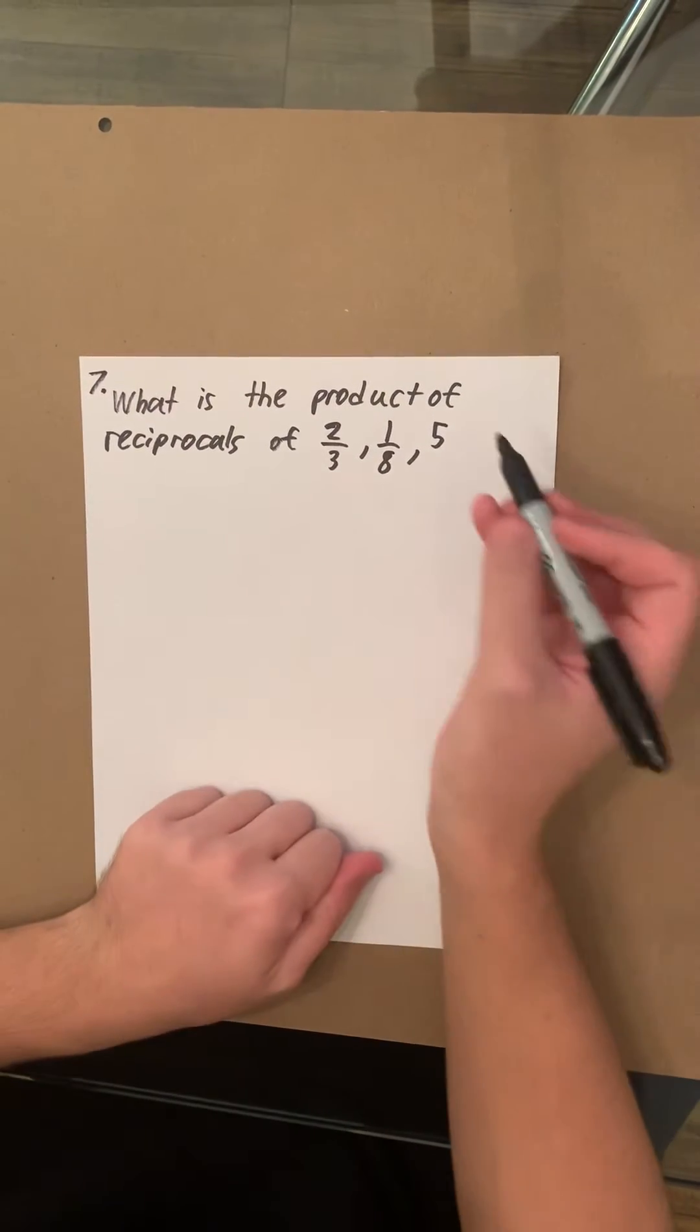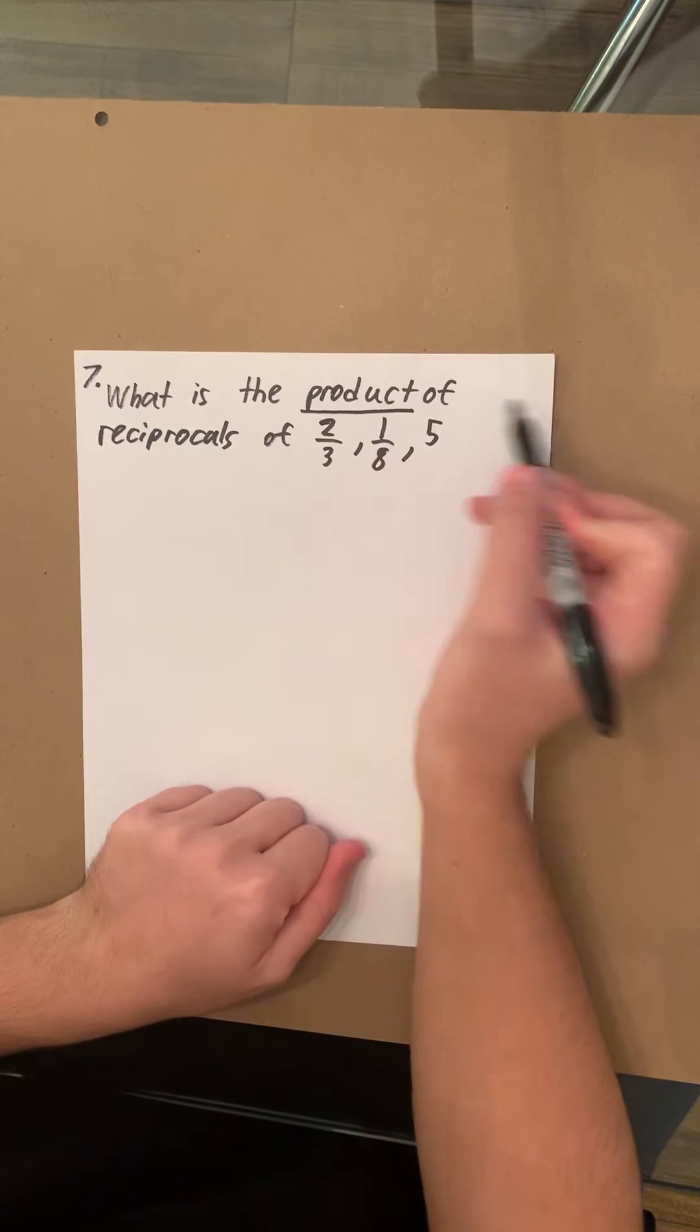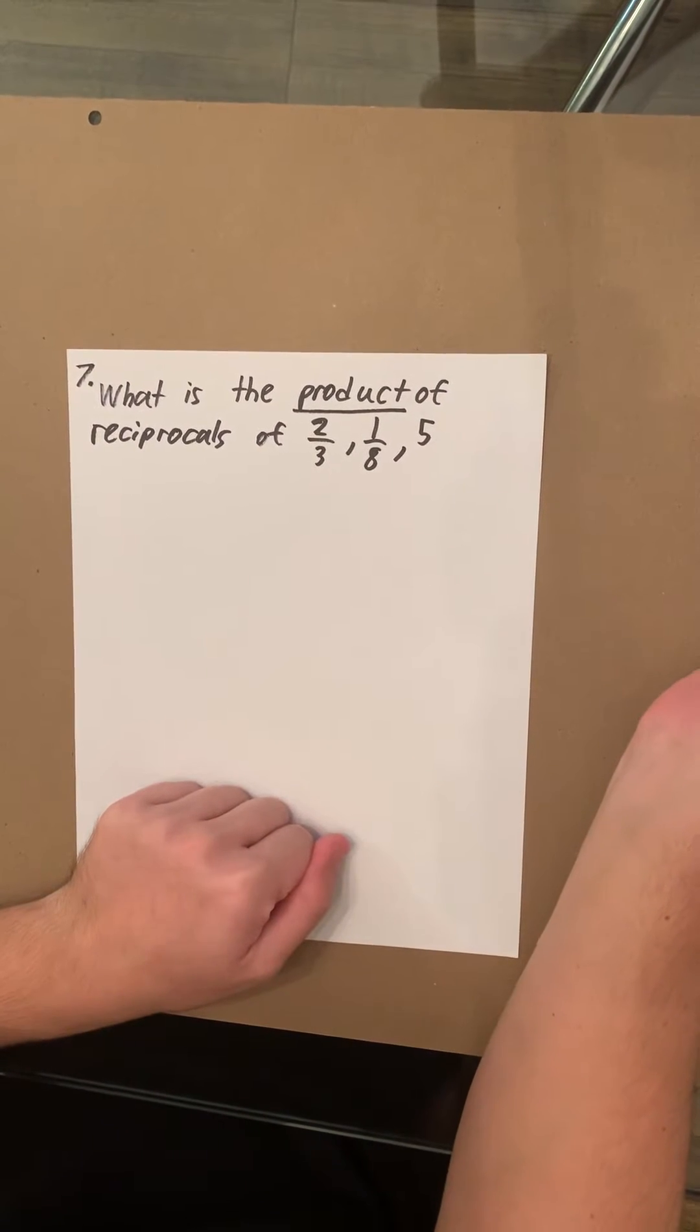So we have a couple key words here. First off is product. Product means that the answer is obtained through multiplication.